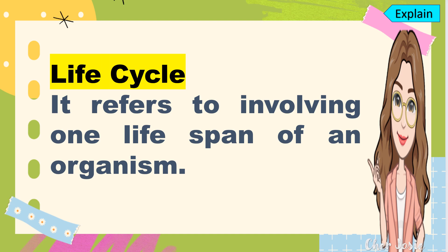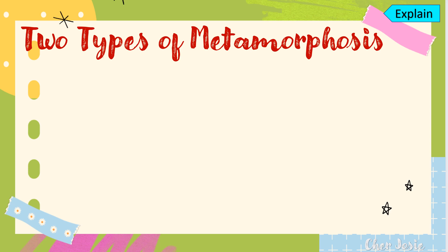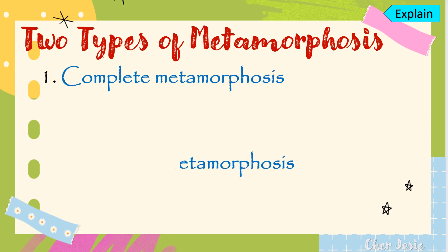First, let's identify the meaning of life cycle. A life cycle refers to one lifespan of an organism. Another term you should learn is metamorphosis — it is a biological process by which an animal undergoes physical development after hatching or birth. There are two types of metamorphosis: complete metamorphosis and incomplete metamorphosis. But today's lesson, we will focus on complete metamorphosis.